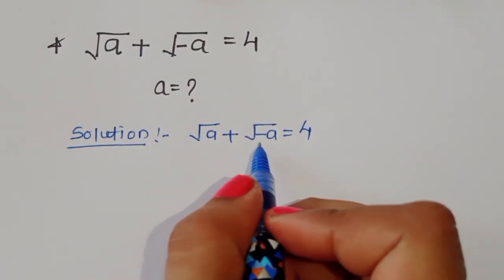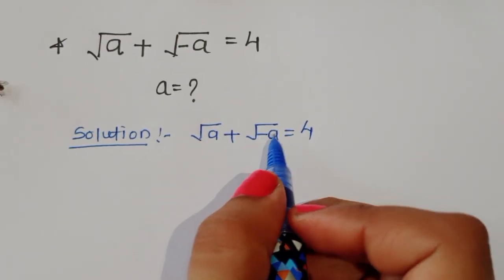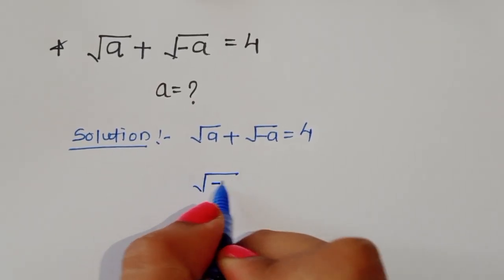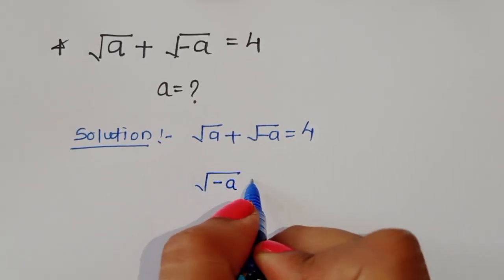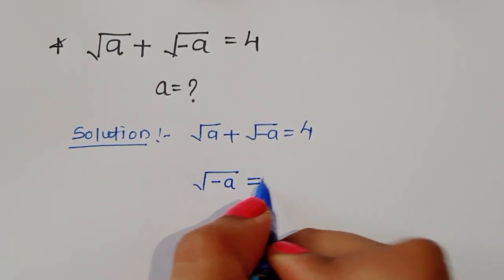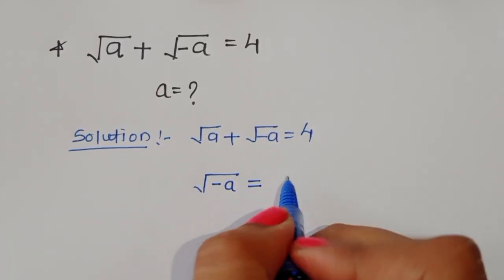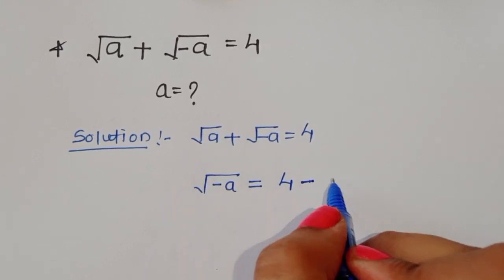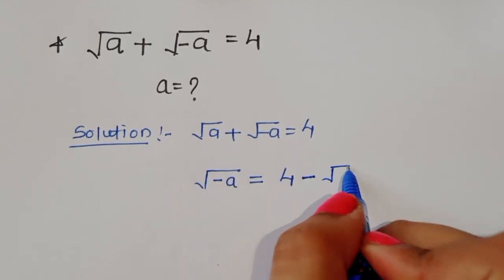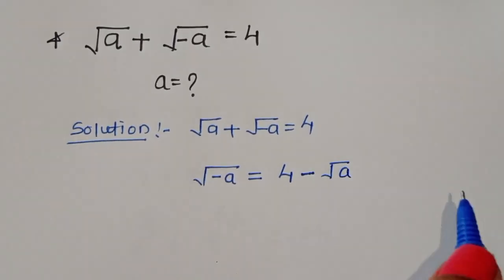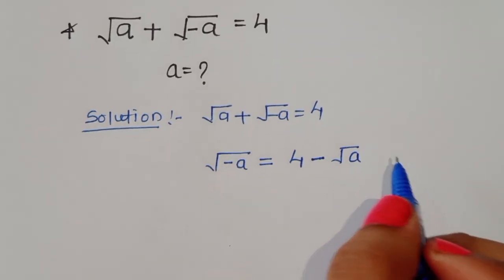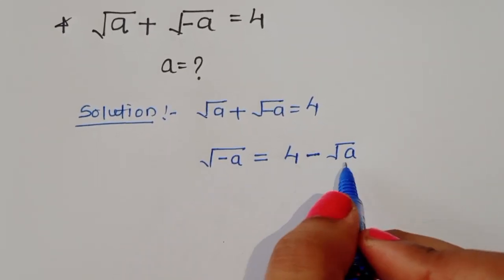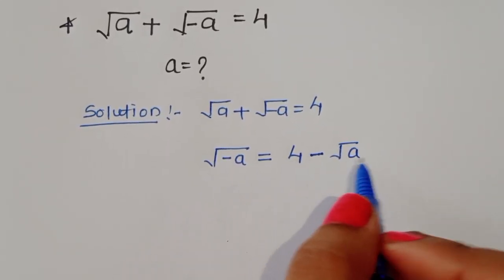We can write this as: √(−a) = 4 − √a. Now, taking square on both sides.